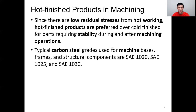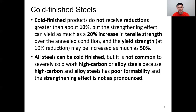While machining hot finished material, the lower residual stresses make it more preferred over cold finished material where the process requires stability during and after machining operations. Typical carbon steels used for machining processes are SAE 1020, 1025, and 1030 — all with lower carbon percentages.